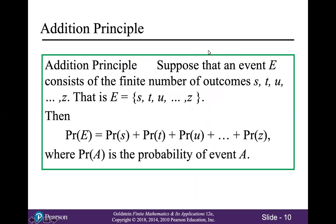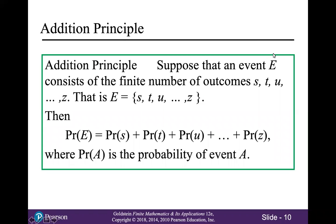That brings us to the addition principle. Suppose that an event E consists of a finite number of outcomes S, T, U, all the way through Z — that is, the event E has as its elements S, T, U, all the way up to Z. Then the probability of E is found by adding the probabilities of all of those individual outcomes: probability of S plus probability of T, all the way up to probability of Z.